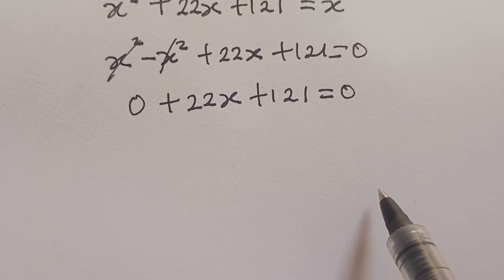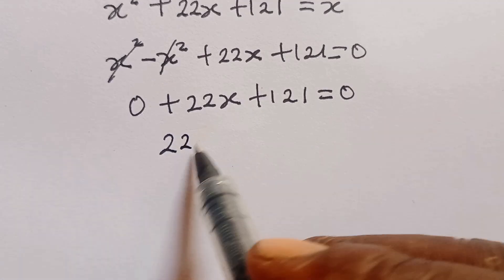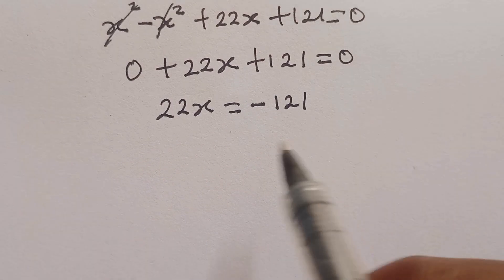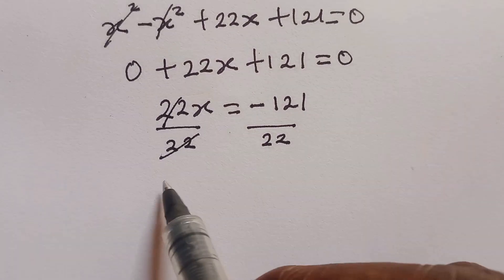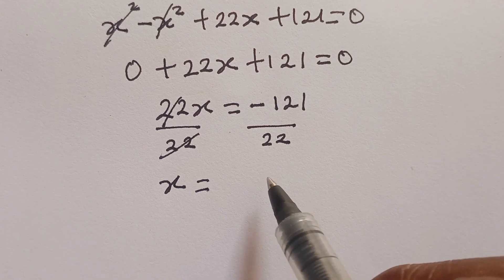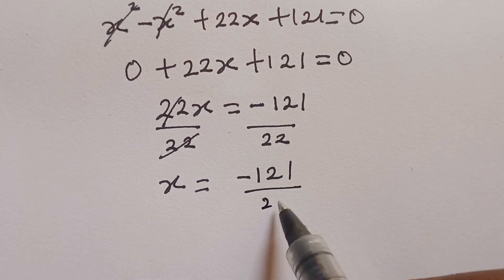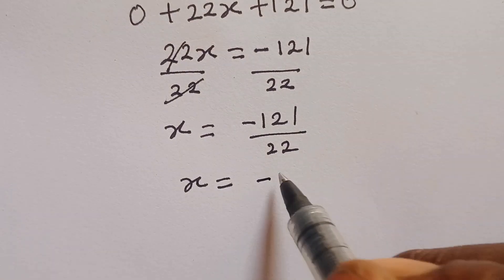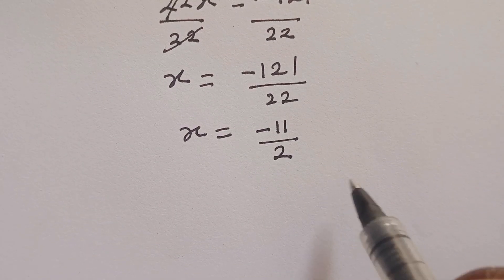Once you understand it up to this stage, I can simply have 22x to be equal to minus 121. With this divide both by 22, I will now be having x equal to minus 11 over 2.